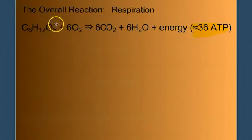So when we look at this overall equation, we're taking glucose in the presence of oxygen, and we're going to break it apart into carbon dioxide and water to liberate energy in the form of molecule ATP, approximately 36 of them.